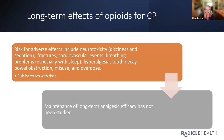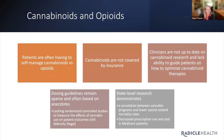What about the long-term effects of opioids in chronic cancer pain? Risks include neurotoxicity — dizziness, sedation, fractures, cardiovascular events, breathing problems especially with sleep. We know opioids can suppress the brainstem that controls breathing and heart rate, and there's also hyperalgesia, tooth decay, bowel obstruction, misuse, and overdose. The risk increases with dose. Maintenance of long-term analgesic efficacy hasn't been studied — we leave patients on opioids for long periods and it's rare that we de-prescribe them.